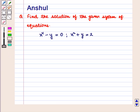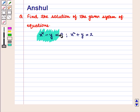Hello and welcome to the session. In this session we are going to discuss the following question: Find the solution of the given system of equations. The equations given are x raised to power 4 minus y is equal to 0, and x square plus y is equal to 2.